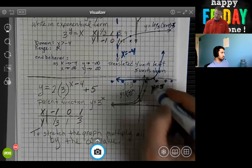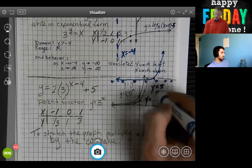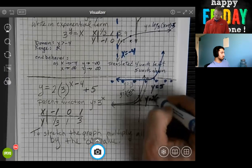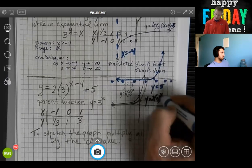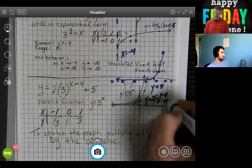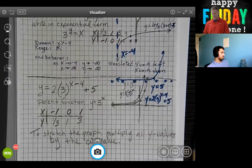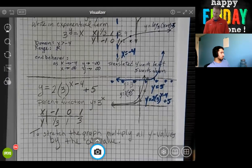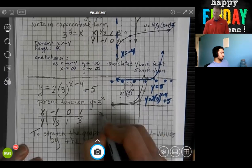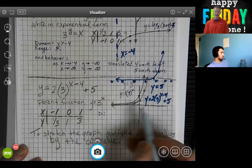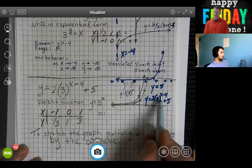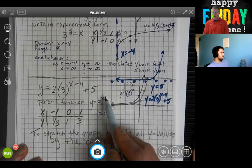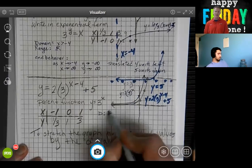Your equation was two times three to the x minus four plus five. It has a domain. You can plug in any number you want, there is no vertical asymptote. It goes forever left, it goes forever right, so it's all real numbers this time for the domain.